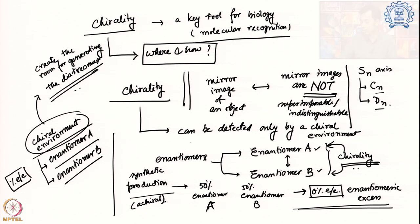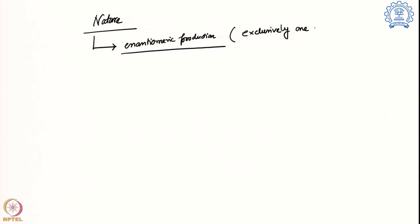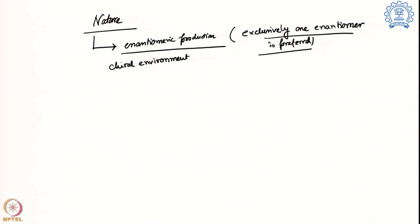If we look back at nature, we see there is a huge amount of enantiomeric production. The question is how nature achieves this, and we find that most of the time exclusively one enantiomer is preferred. This actually gives us an idea that the reactions happening in nature are creating a chiral environment, and that is the first reason why experiments in nature yield exclusively one particular enantiomer.